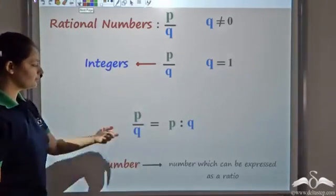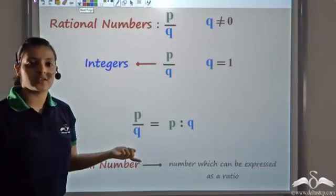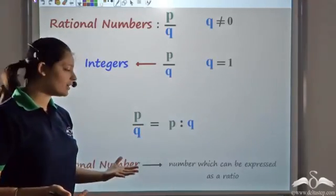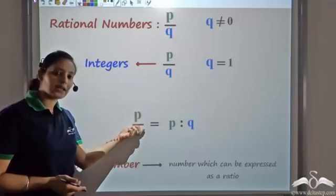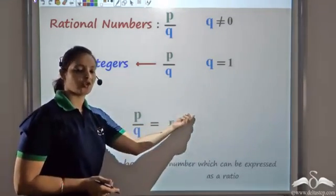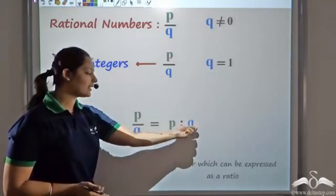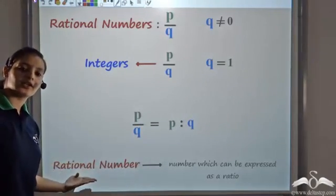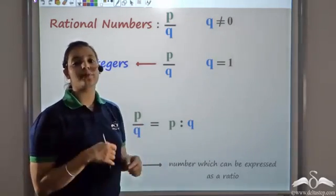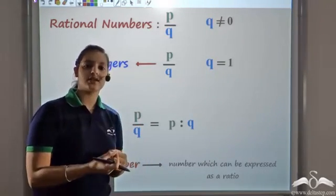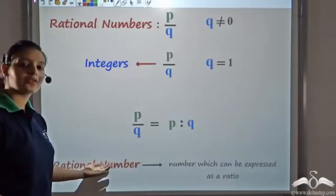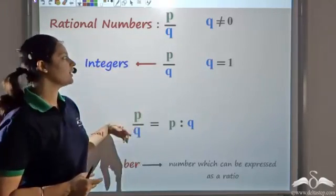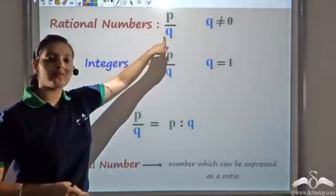So why were these rational numbers called rational numbers? Well, they were not initially named rational numbers, but later what they realized is that this number p by q could be expressed as a ratio — p is to q. They realized that the ratio p is to q is nothing but p by q, which is the rational number. So these numbers were called rational numbers because they could be expressed as a ratio of two numbers. That is how we added integers and fractions together to get rational numbers, where rational numbers are defined as p by q where q cannot be zero.